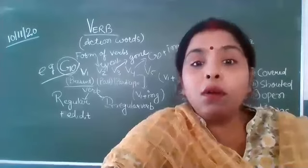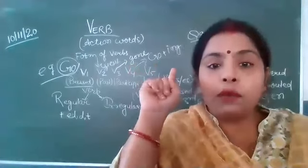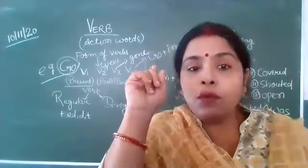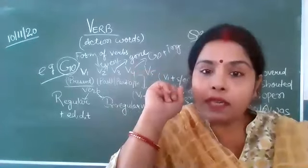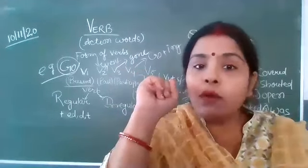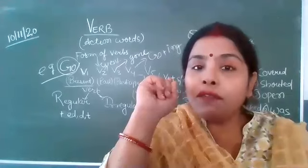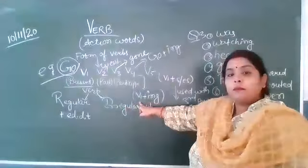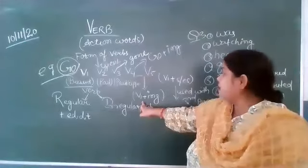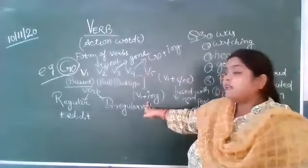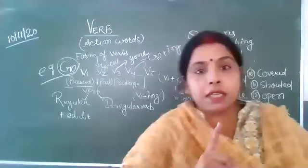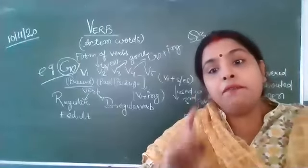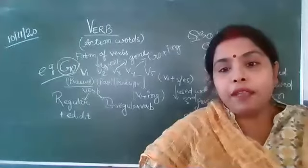V3 is the participle form. If V1 is 'go' and V2 is 'went,' then V3 is 'gone.' V4 mein kya hai — verb plus ING. Yaani kisi bhi word ke original form mein agar aap ING laga do, toh wo V4 ban jata hai.